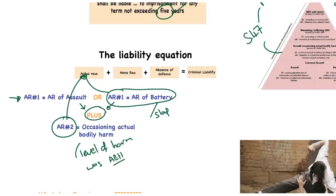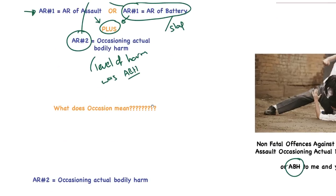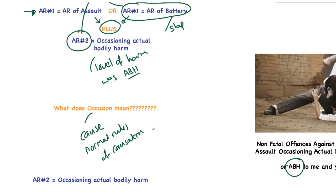I'm not going to deal again with the actus reus of assault or battery — we've done those. What I am going to do is spend some time looking at what we mean by 'occasion' and what we mean by 'actual bodily harm.' In simple terms, occasion means the same — believe it or not — as 'cause.' So we now have 'cause,' 'inflict,' and 'occasion,' all of which mean the same thing, meaning the normal rules of causation exist. Occasion means to cause, and this is confirmed in the case of Roberts 1971.